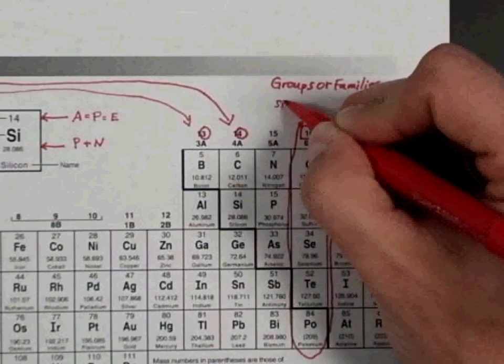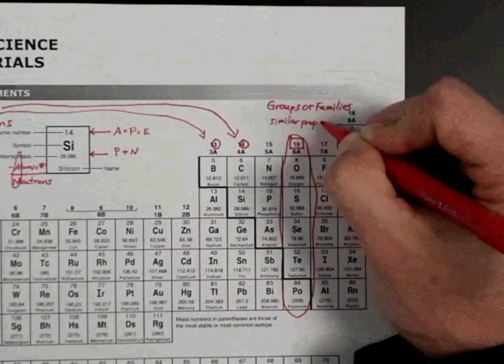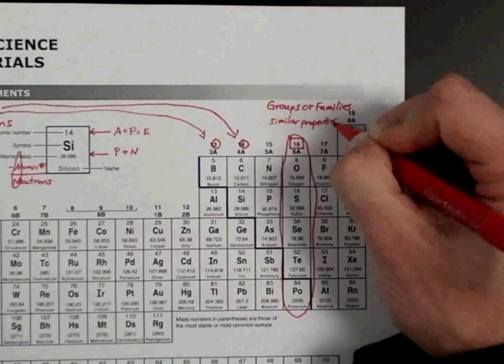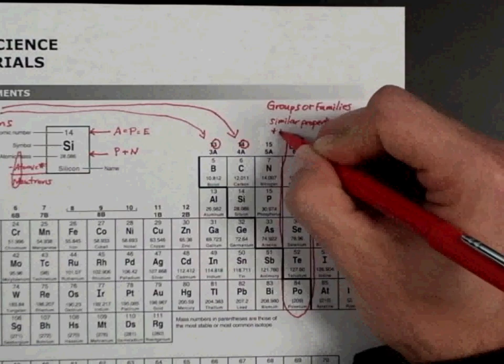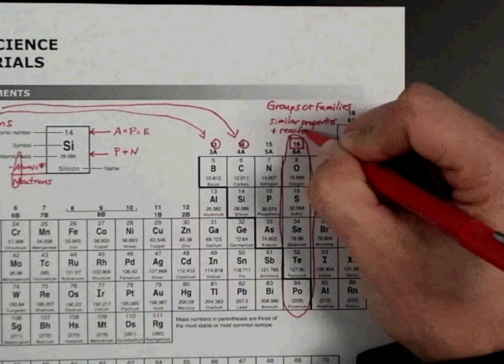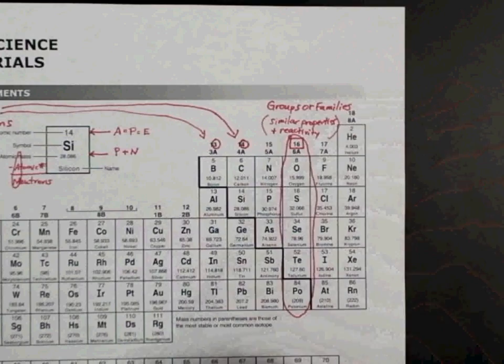All right, moving on, we're going to now go over to the rows, which are called periods on the periodic table, and make sure we have reactivity on there because that's what that group number tells us in the valence electrons.